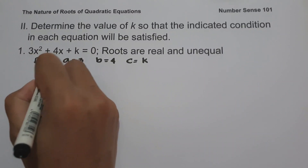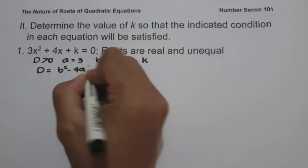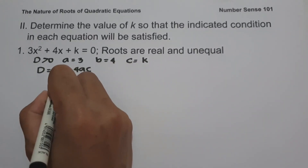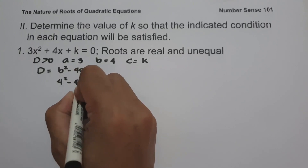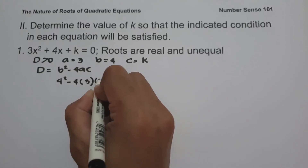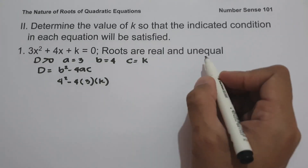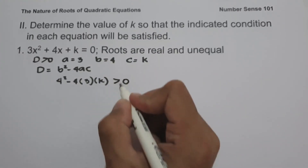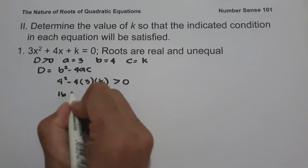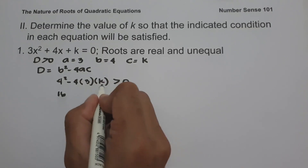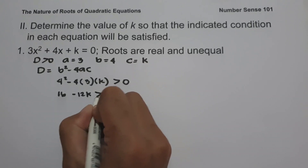And the formula for the discriminant is d equals b squared minus 4ac. So we are going to have 4 squared minus 4 times a, that is 3, and c, that is k. Since the roots are real and unequal, we are going to have greater than 0. So 4 squared is 16, and negative 4 times 3 is negative 12 times k, that is negative 12k, greater than 0.